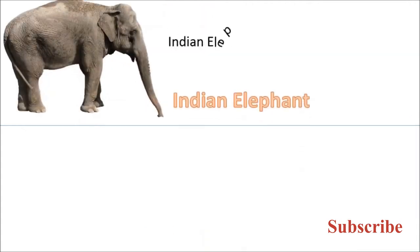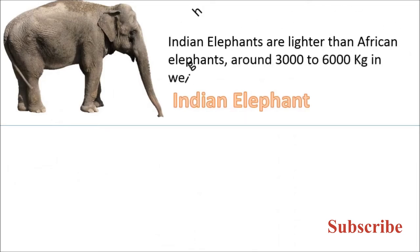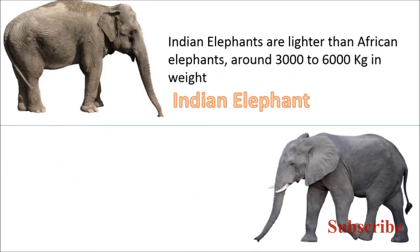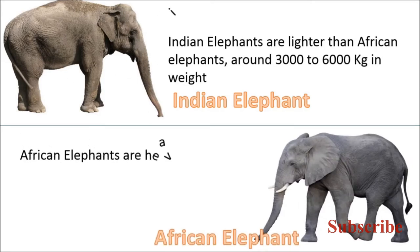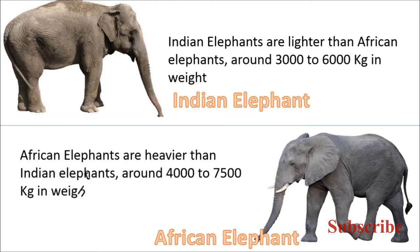Indian elephants are lighter than African elephants, around 3,000 to 6,000 kg in weight. African elephants are heavier than Indian elephants, around 4,000 to 7,500 kg in weight.